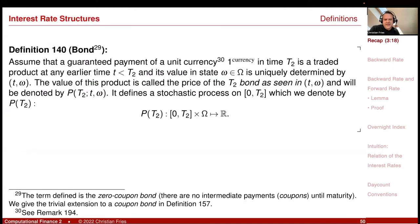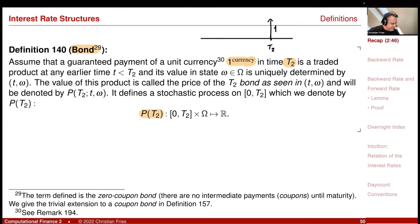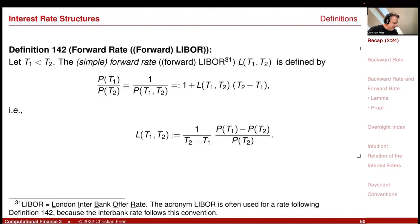There was the definition of the zero coupon bond — sometimes I just call it the bond. It is the guaranteed payment of one unit of currency at a future point in time. So this is my P and it depends on the maturity T2. In T2, I receive one unit of currency. And I ask myself, what is the value at an earlier point in time, say little t? So this P of T2 is a stochastic process; if I evaluate it in little t, it is a random variable. Based on this, we defined different versions, different conventions of interest rates. There was the forward rate, which is just the ratio of two such zero coupon bonds for different times.